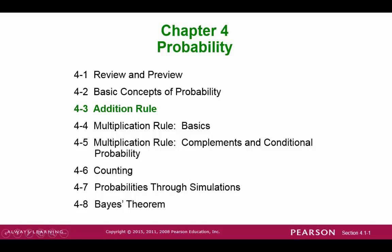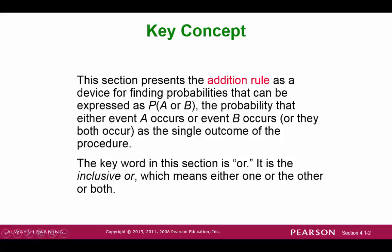Section 4-3: Addition Rule. The main idea in this section is to be able to find the probability of a compound event. The key word is OR. The probability of event A or event B happening is going to involve some addition of probabilities.